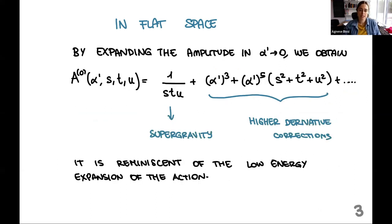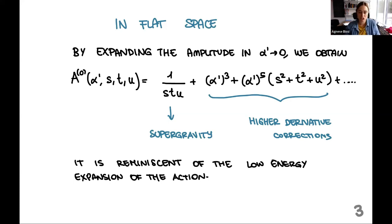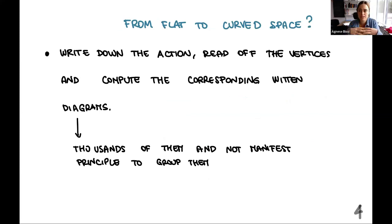If we expand the amplitude when alpha prime is small, the first term looks like one over s, t, and u, and then we have a full expansion in alpha prime. This is reminiscent of the low-energy expansion of the string action: the first order corresponds to the supergravity term, and then we have all the higher-derivative corrections. This is also what happens when we go to curved space. We can go from flat to curved space using the usual Feynman diagram techniques — write down the action, read off vertices, and compute diagrams.